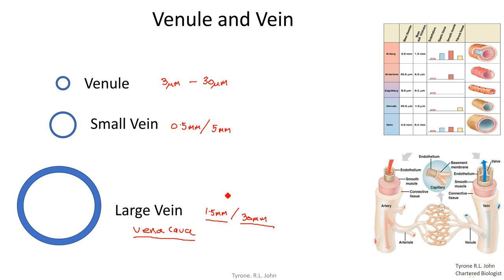That's the end of this video on the structure and function of blood vessels. The next video will expand on some of the topics covered here. Make sure you know the differences between arteries, veins, venules, capillaries, and arterioles; the composition of the tunica media; and the names of the layers of these blood vessels.